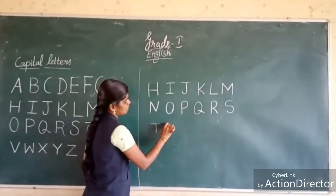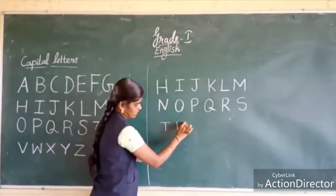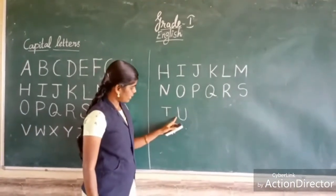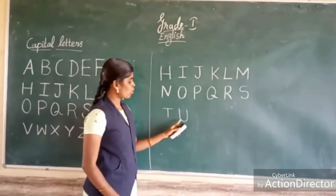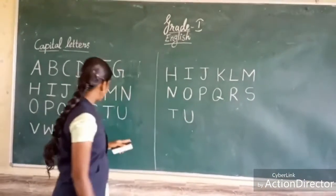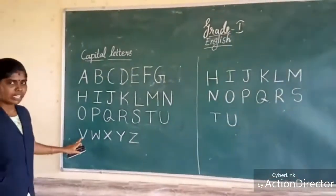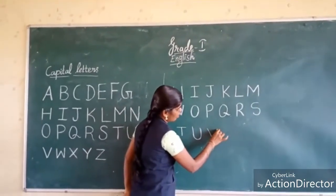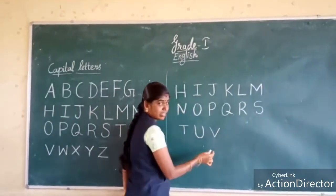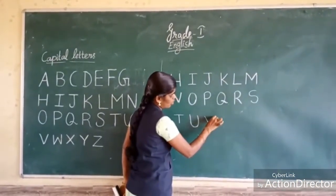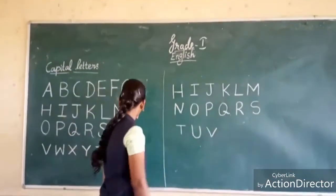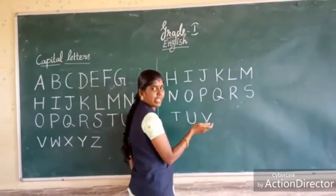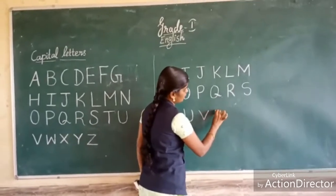Next, U. One standing line, a curve at the bottom, and an opposite standing line. This is U. Next, V. One cross line going down and another cross line going back up. This is V.